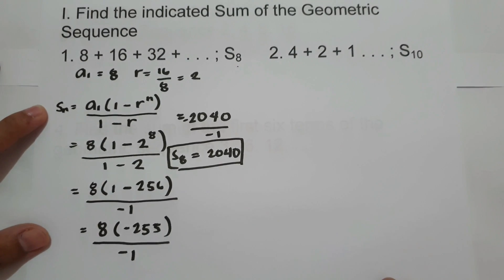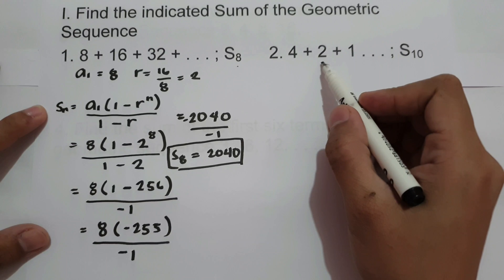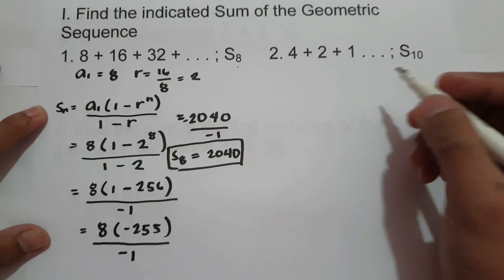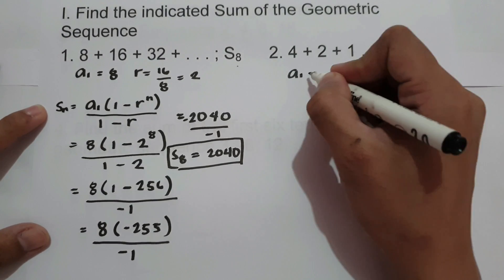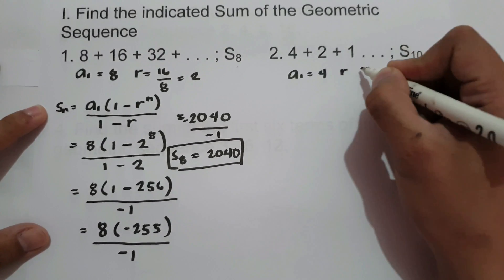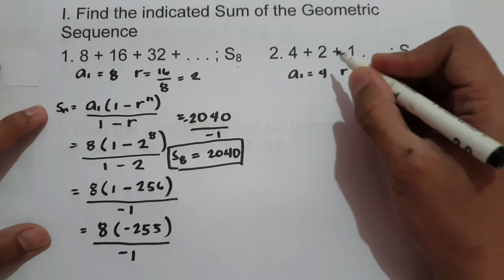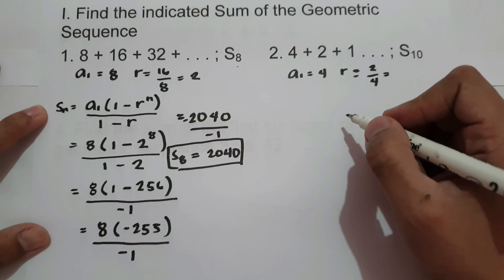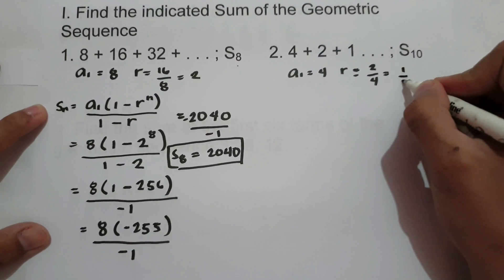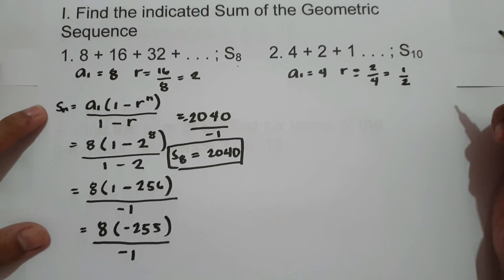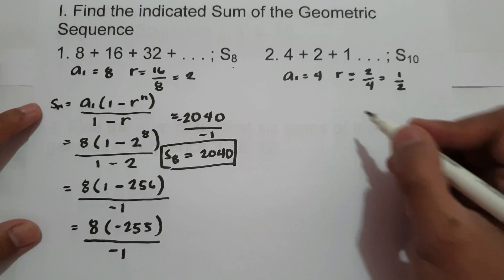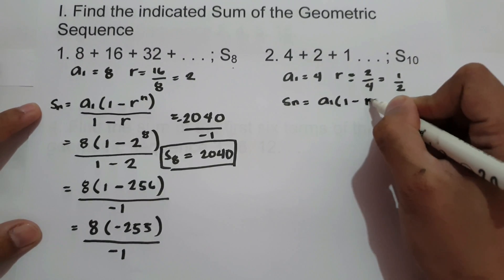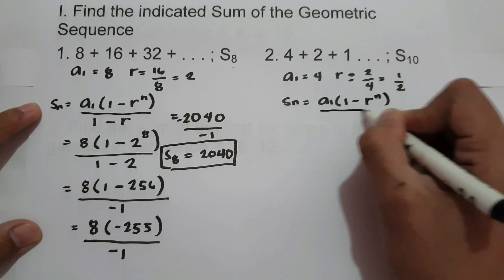For number 2, we have the sequence 4, 2, and 1, and we are looking for the sum of the first 10 terms. So a sub 1 is 4. To find the common ratio, divide the second term by the first term: 2 divided by 4, which simplifies to 1 half. Let us use the formula S sub n equals a sub 1 times (1 minus r raised to n) all over (1 minus r).